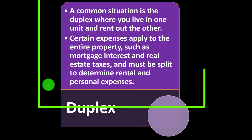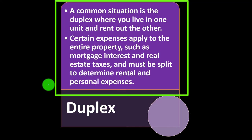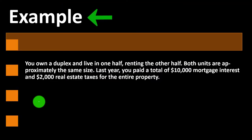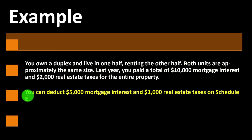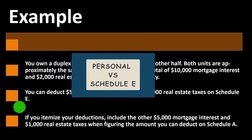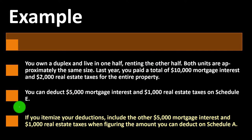A common situation is the duplex where you live in one unit and rent out the other. Certain expenses apply to the entire property, such as mortgage interest and real estate taxes, and must be split to determine rental and personal expenses. For example: you own a duplex, live in one half, and rent the other — both units approximately the same size. You paid $10,000 mortgage interest and $2,000 real estate taxes for the entire property. You can deduct $5,000 mortgage interest and $1,000 real estate taxes on Schedule E, and the other $5,000 mortgage interest and $1,000 real estate taxes on Schedule A if you itemize.